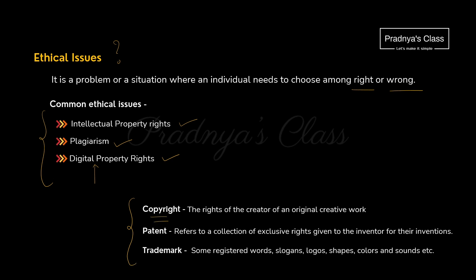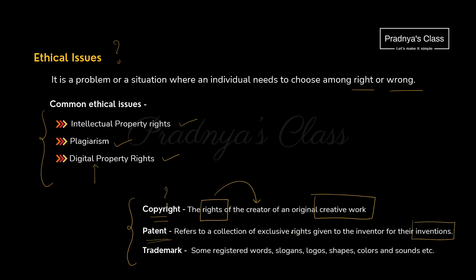The first term is copyright. These are the rights given to the creator for their original creative work, so that no one else can use their work. Here is one more term: patent. If someone invented something, for their inventions we give a collection of rights. You might have heard that someone has a patent on their name for their discoveries.